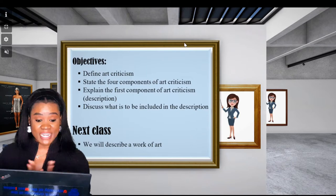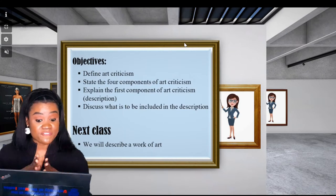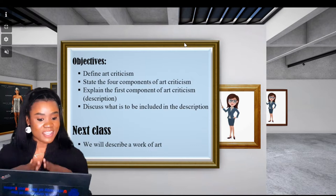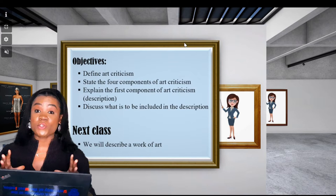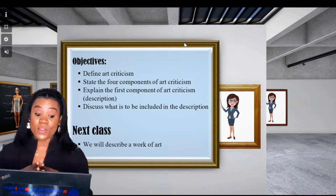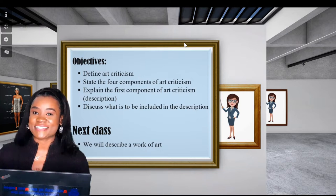So today's objectives: we will be defining art criticism, we're going to state the four components of art criticism, we're going to explain the first component of art criticism which is description, we're going to discuss what is to be included in the description, and then we are going to describe a work of art in the next class.